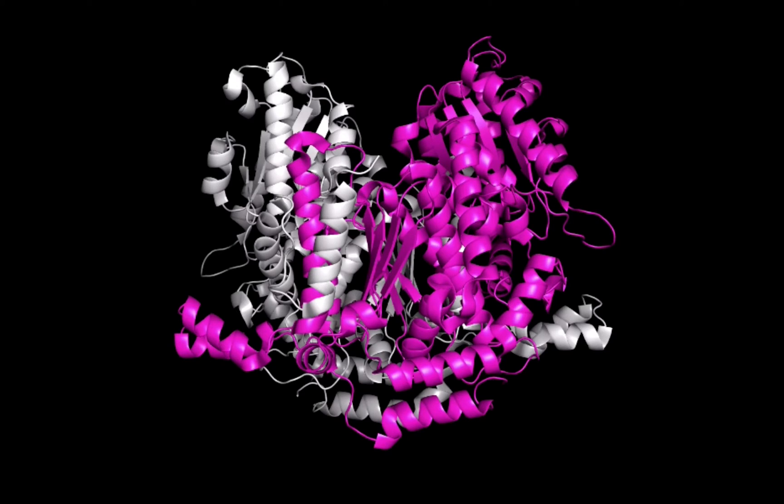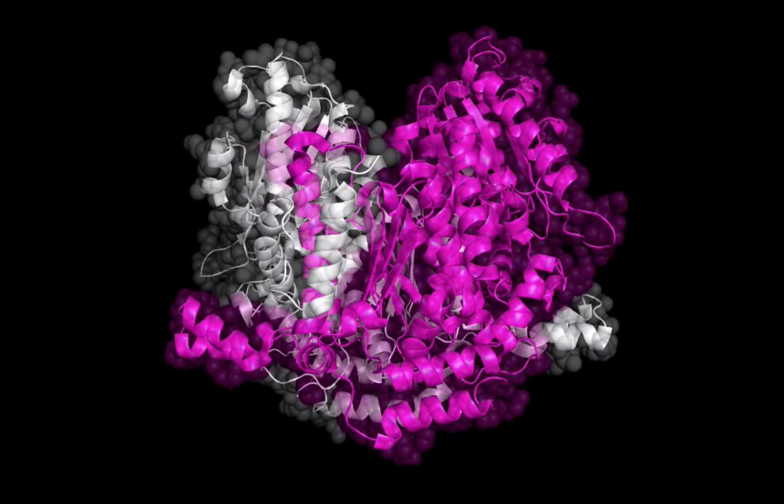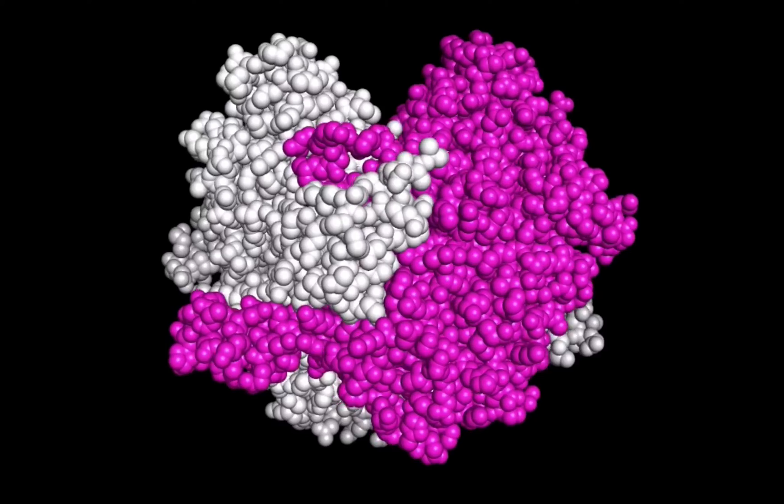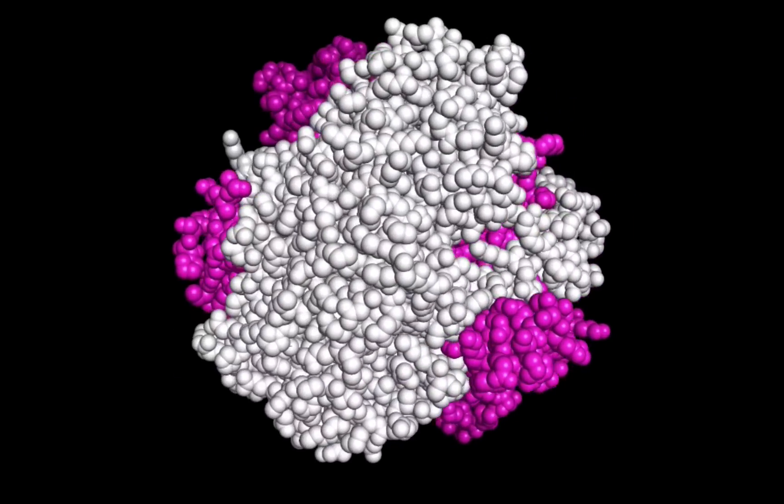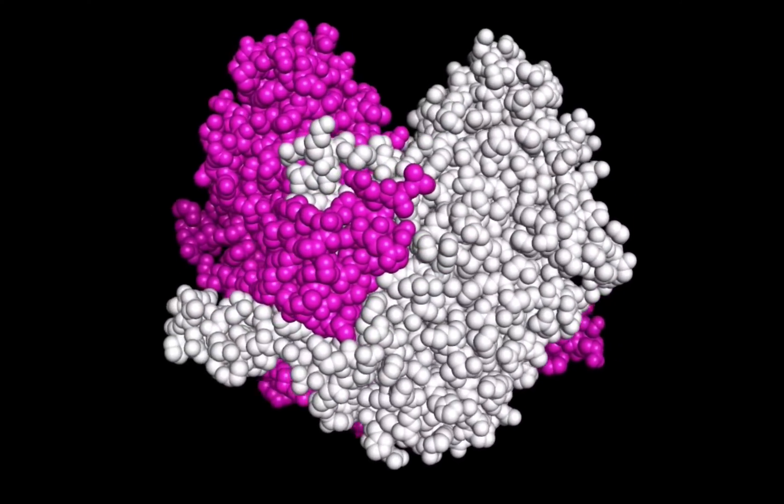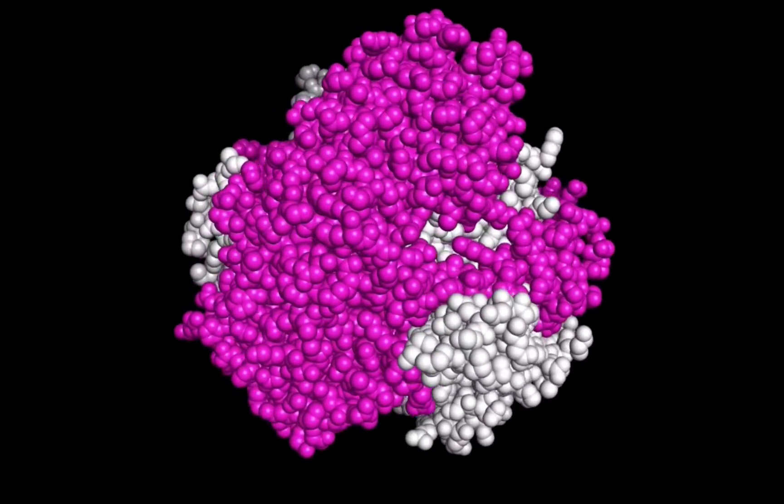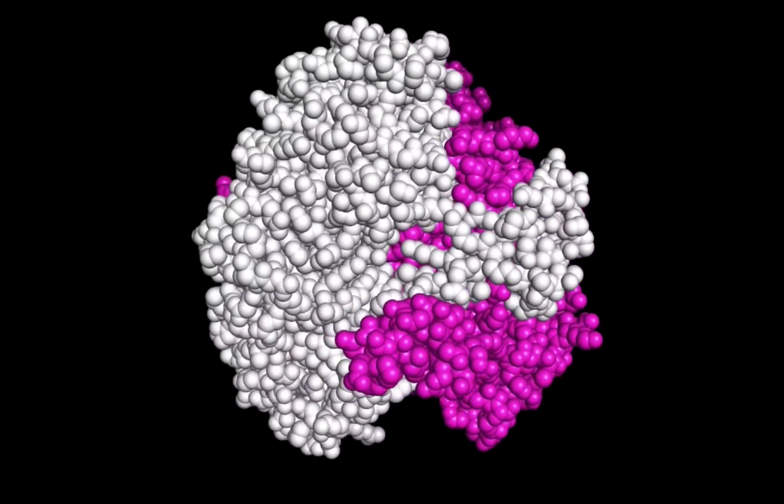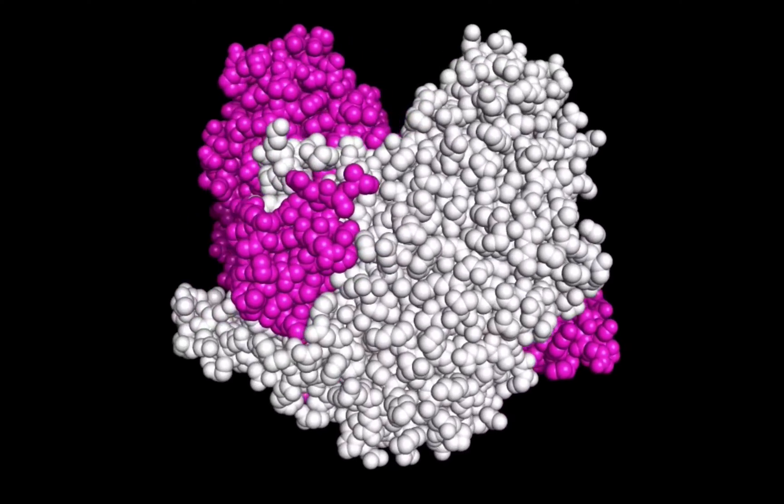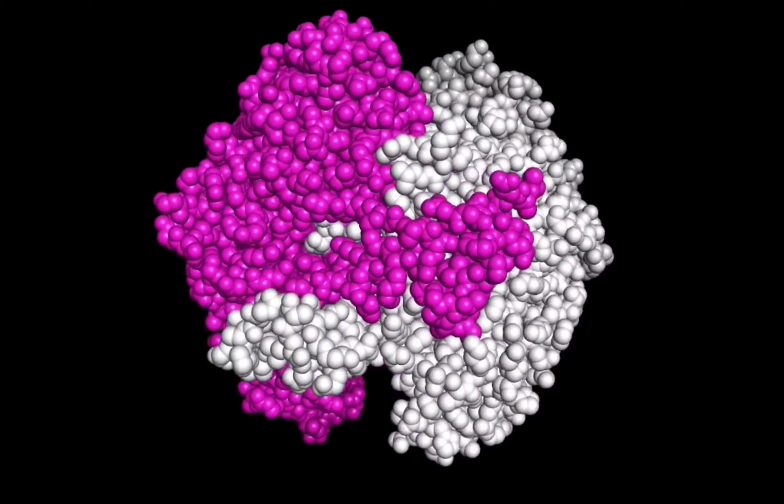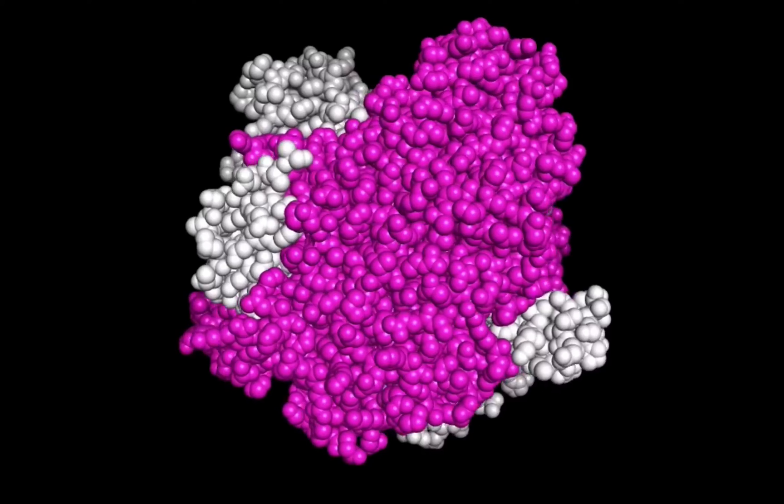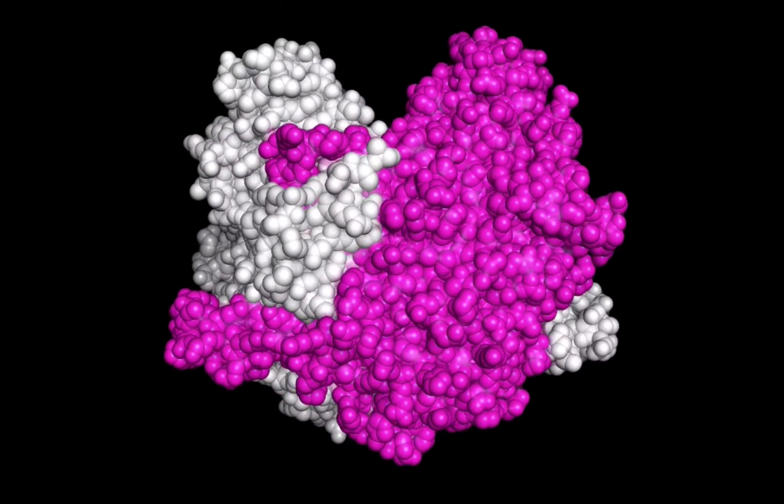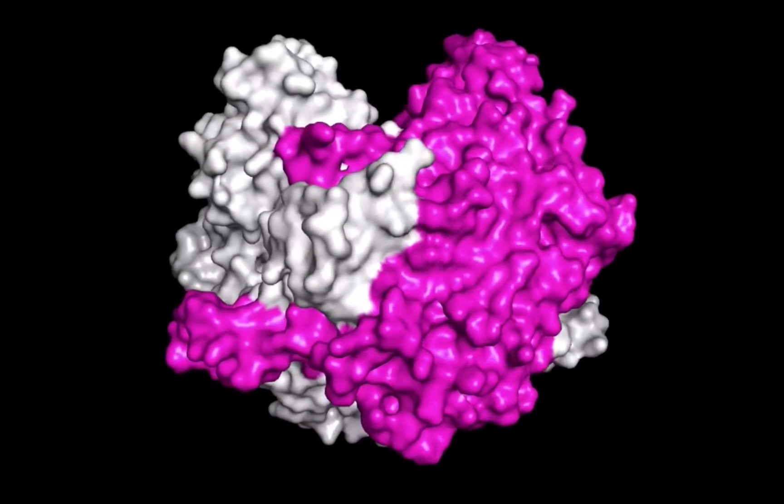Let's change our representation to space filling, where each atom of every amino acid in the protein is represented by a sphere to show its surface. I love this rendering because it gives a clear view of how the dimer is intertwined. It's like one chain of the enzyme is giving the other a hug. Now let's switch to the surface rendering of the protein, keeping our coloring the same.